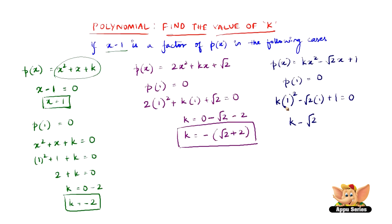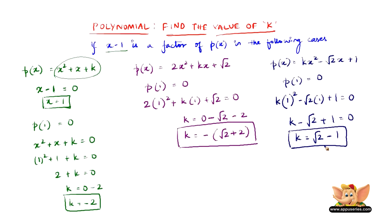k will be equal to: when minus root 2 goes to the other side it becomes plus root 2, and plus 1 goes to the other side it becomes minus 1. Therefore the value of k is root 2 minus 1.